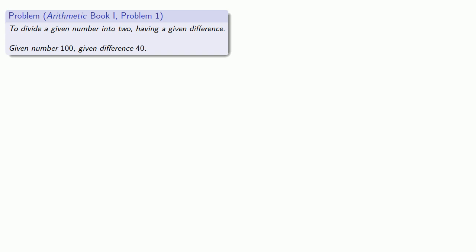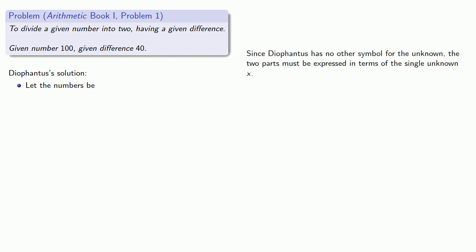The solution to almost every problem in the Arithmetic begins with Diophantus saying something like "let the two numbers be" followed by an algebraic expression. Since Diophantus has no other symbol for the unknown, the two parts must be expressed in terms of the single unknown x. Typically the expression satisfies at least one of the conditions of the problem. In this case, since the difference is 40, the two numbers must be x and x plus 40.